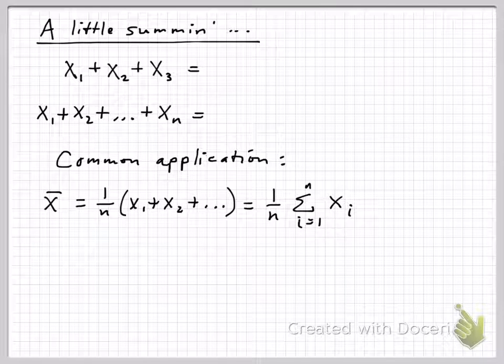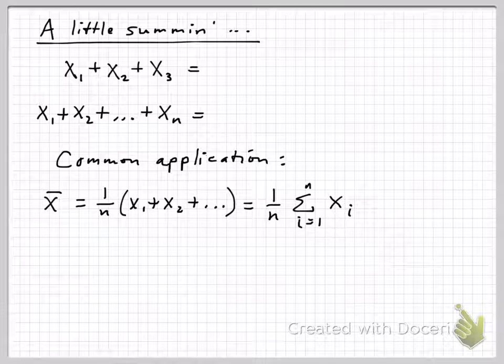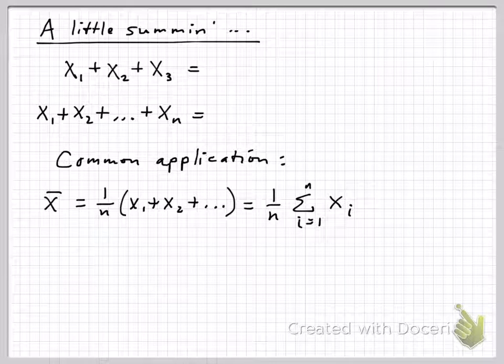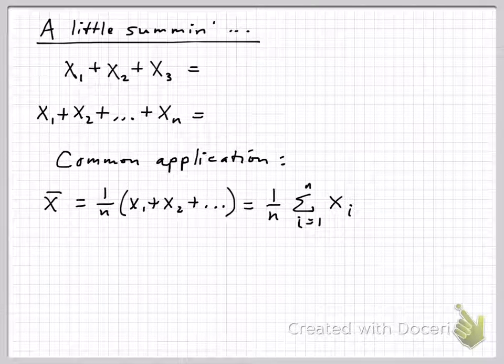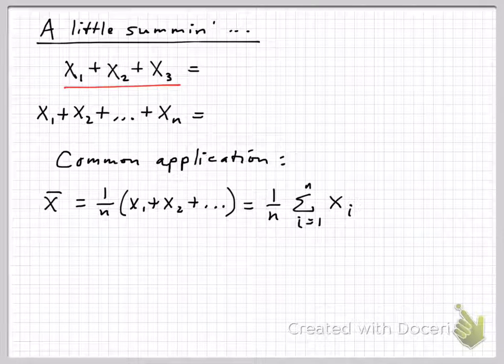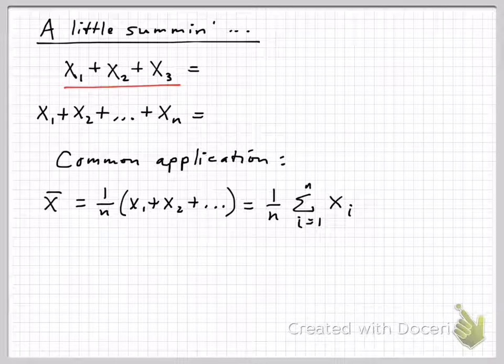Well, how do we define the summation notation? It's just a string of things that are added together, and in this case, let's start with x1 plus x2 plus x3. That's a simple sum of three numbers. Those numbers could be anything.